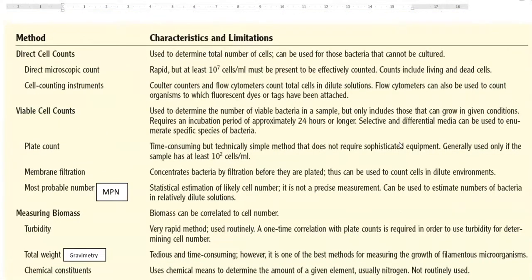The second column shows the characteristic features of the particular methods employed and their limitations. If you look into the direct cell counts, which refers to determining the total number of cells which can be used for bacteria that may not be cultured there in your petri plate, under this direct cell count, two methods could be employed.